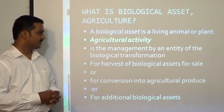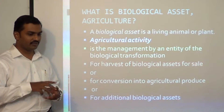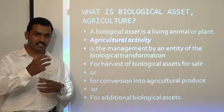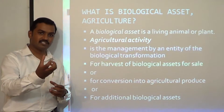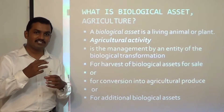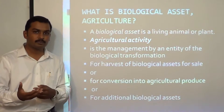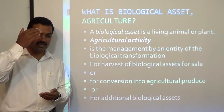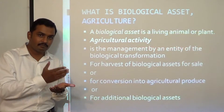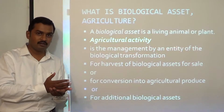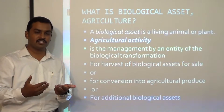What is agricultural activity? It is the management by an entity of the biological transformation of a biological asset — a living animal or a plant. We are trying to manage the biological transformation for a purpose: so that in future we can harvest it for sale, or harvest the living plant or animal for selling the harvest.